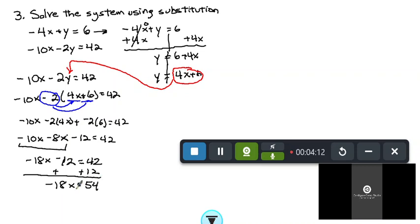Finally, take and divide both sides of the equation by negative 18. And I wind up getting x equals negative 3.